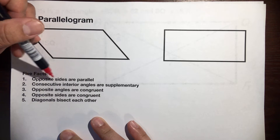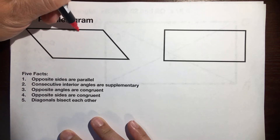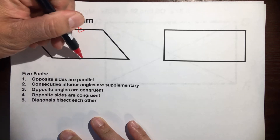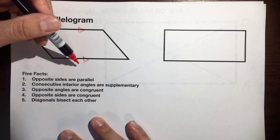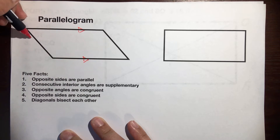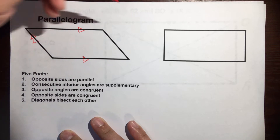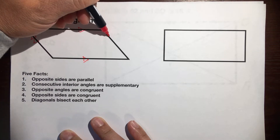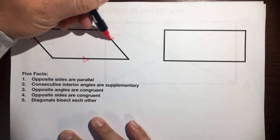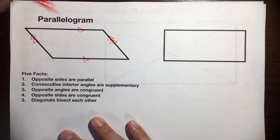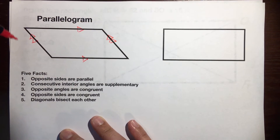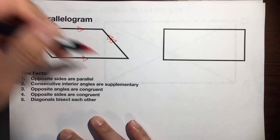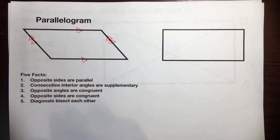Fact one: opposite sides are parallel. We can say that this side is parallel to this side with an arrow, and this side is parallel to its opposite side with an arrow. That means these sides would never intersect if these lines went on forever.